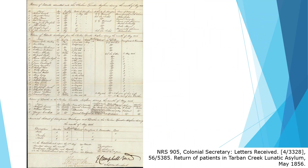An example is a return of patients in Tarbon Creek Lunatic Asylum in May 1856, from the series of Colonial Secretary's correspondence dated 1826 onwards. The letter has tables for the returns of patients admitted, discharged, and who died in Tarbon Creek Lunatic Asylum in May 1856, and was sent by the Superintendent of Tarbon Creek to the Colonial Secretary.